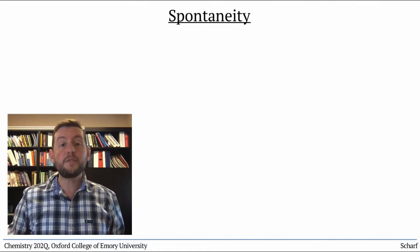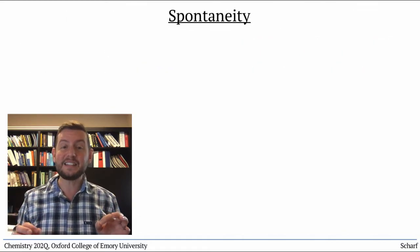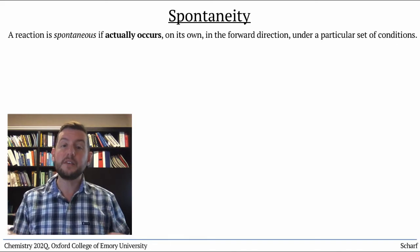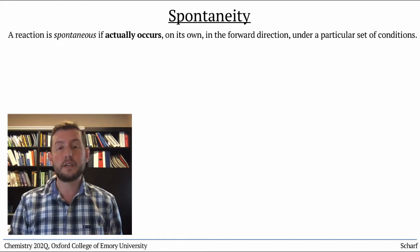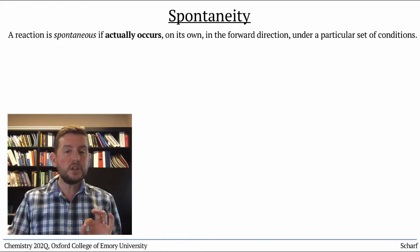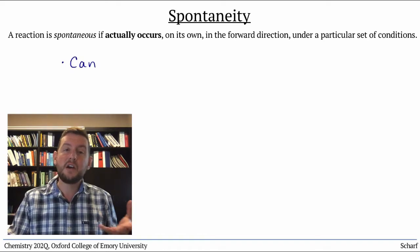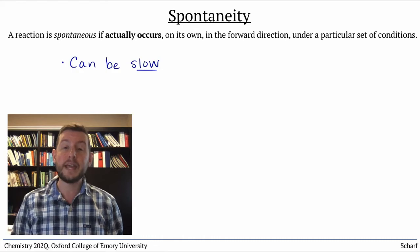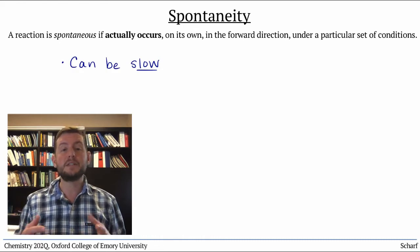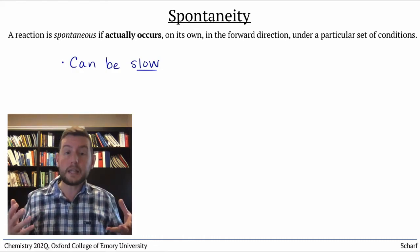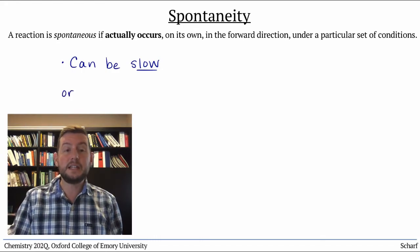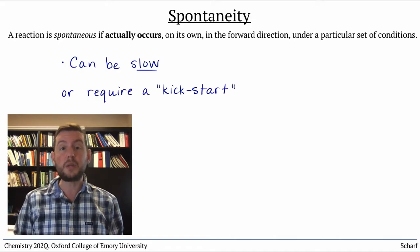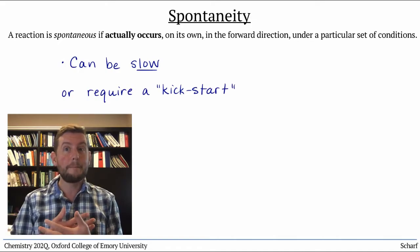A chemical or physical process is spontaneous if it actually occurs on its own in the forward direction under a particular set of conditions. It's worth noting that sometimes spontaneous reactions are very, very slow. Just because a process is spontaneous doesn't mean it happens automatically or quickly. Sometimes spontaneous processes need a little kickstart before they happen, or sometimes they just happen super slowly, like over millennia.